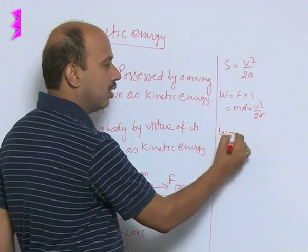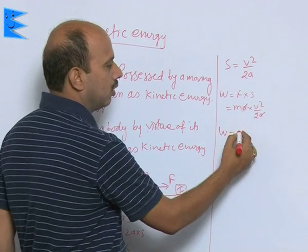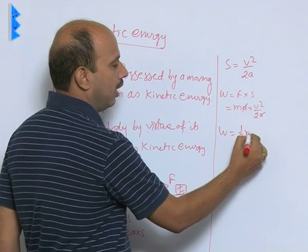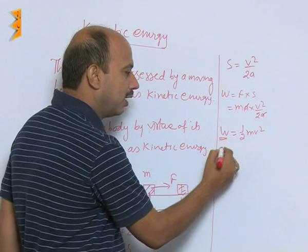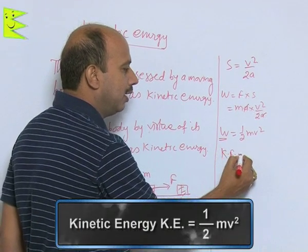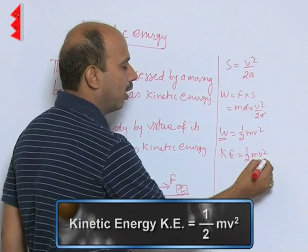So we can write w is equal to 1 upon 2 m v square. This work done is taken as kinetic energy. So we can write kinetic energy is equal to half m v square.